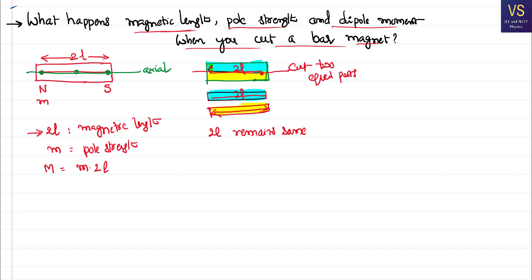Now what happens to the pole strength? Pole strength is the strength of the edge of the pole to attract or repel other poles. This is because of tiny molecular magnets inside the bar magnet — each molecule behaves like a small magnet. When you cut it to the middle, the number of molecules in each piece is only half of the original magnet, so pole strength becomes half.